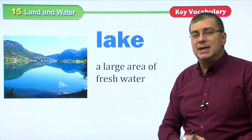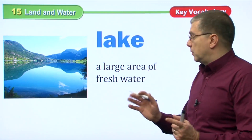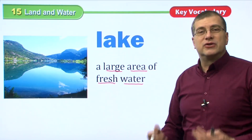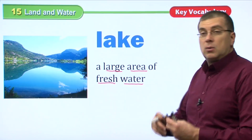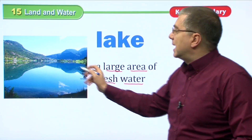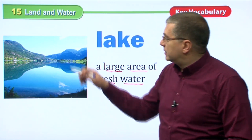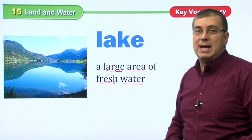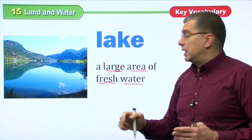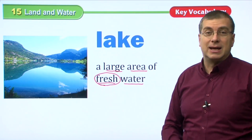Remember, a river is moving water. If the water is not moving, we can call it a lake. A lake is a large area of fresh water. Rivers and streams are usually fresh water too. We find many lakes in mountains, but also on plains and in hills. Some lakes are really, really big — you can't see across them. But if it's fresh water, we call it a lake, not an ocean.